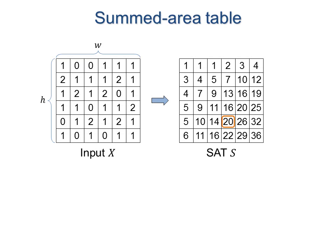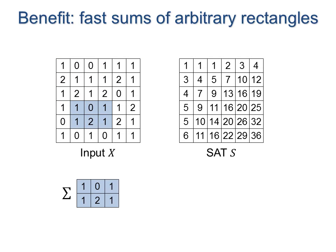In a summed area table, each element stores the sum of all entries above and to its left. An important benefit is that the sum of any 2D rectangle can be computed in constant time, as a simple linear combination of entries at its four corners.